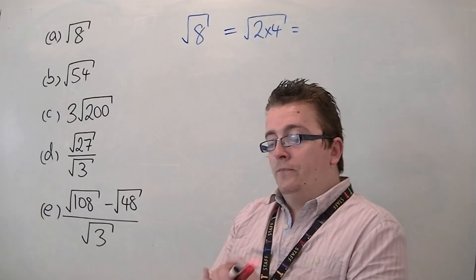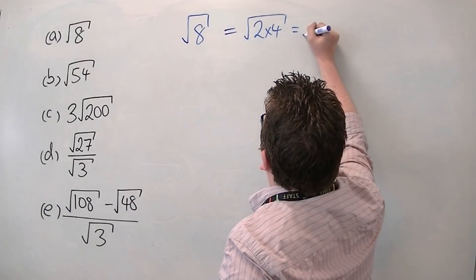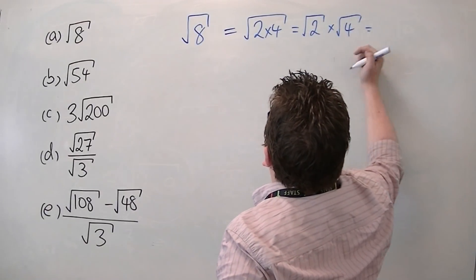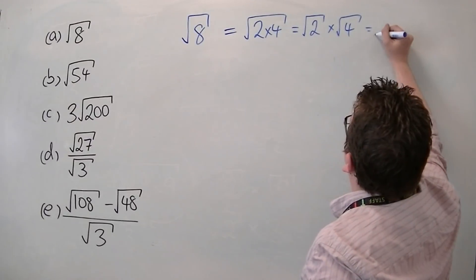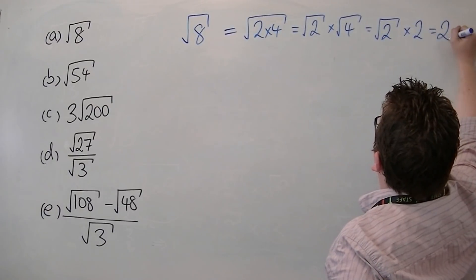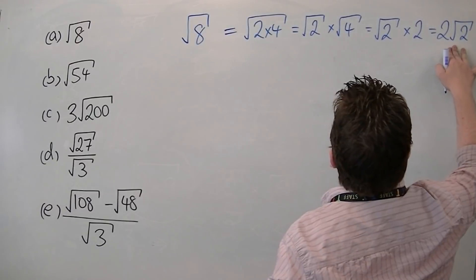Now, you can split that square root because we've got the multiplier, so that's root 2 times root 4. Now, root 4 is 2, so you can just write this as 2 root 2. So root 8 is 2 root 2.